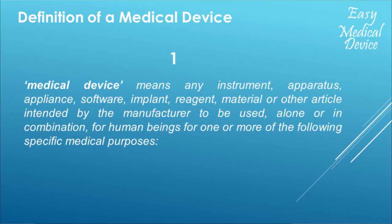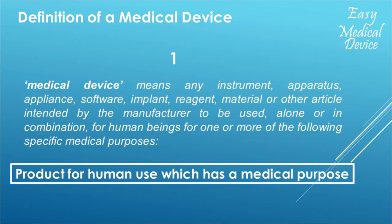Let's review the first part. As you can see on the first block of the definition, a medical device means any instrument, apparatus, appliance, software, implant, reagent, material or other articles intended by the manufacturer to be used alone or in combination for human beings for one or more specific medical purposes. Instead of listing all those items, I will just say 'products' — we understand how a medical device can look. So, we can say first that this is a product for human use which has a medical purpose.